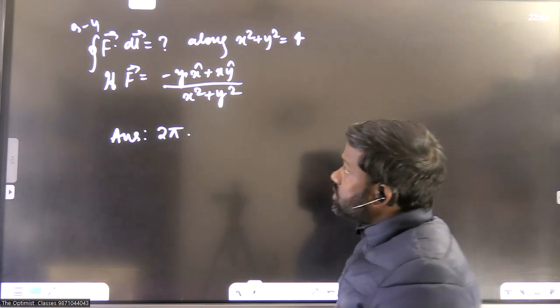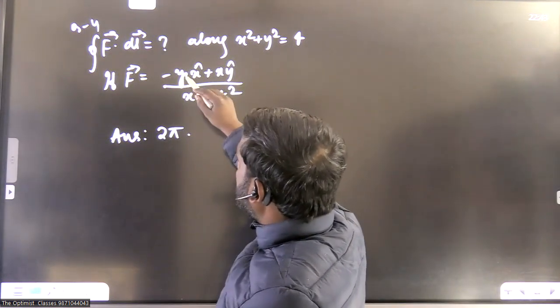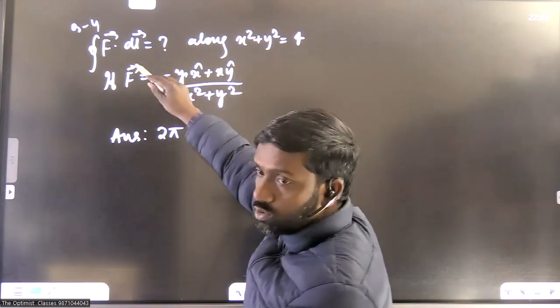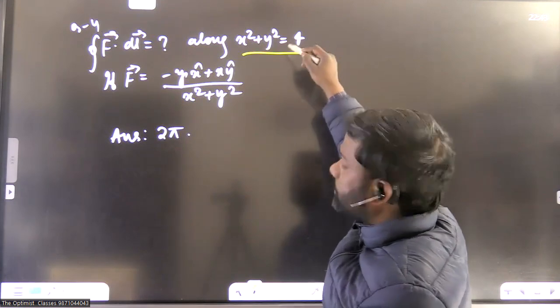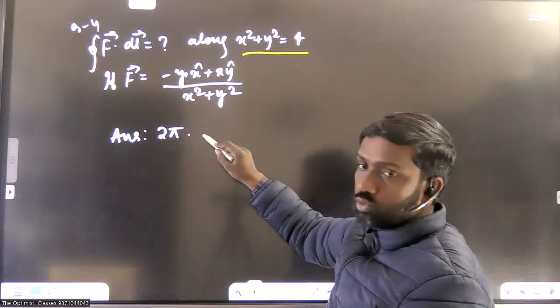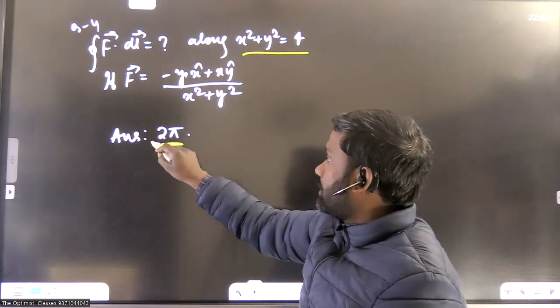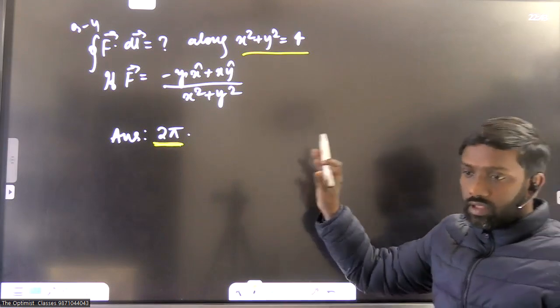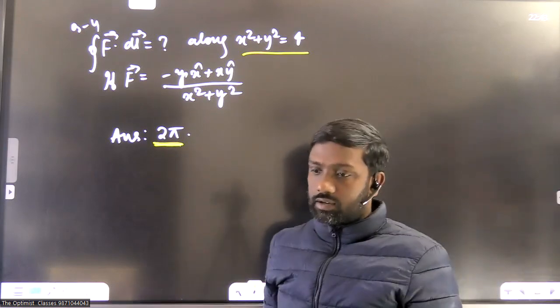Now this is another question. There is a vector given and its line integration along closed loop is to be calculated. And here closed loop is a circle of radius 2. So if you calculate this, then answer comes out to be 2π. So check your answer whether you have ticked 2π or not. So if you have written 2π, then your answer is correct.